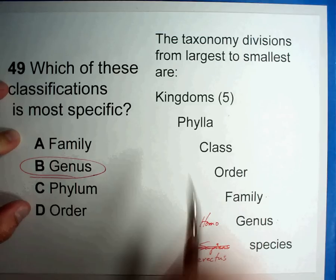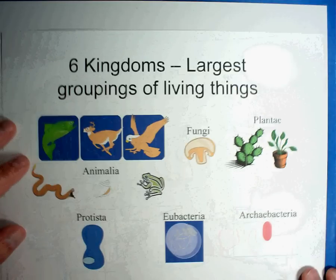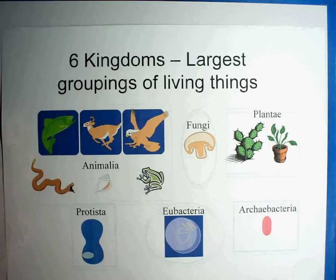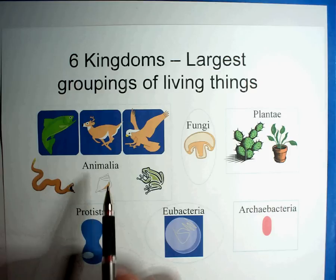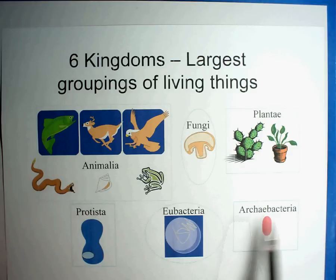I want to make sure you see how these levels go together. The very first thing you need to know is that there are six major kingdoms in the world: Animalia, Fungi, Plantae, Protista, Eubacteria, and Archibacteria.